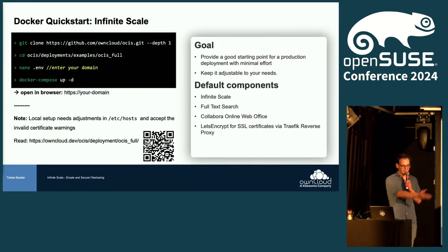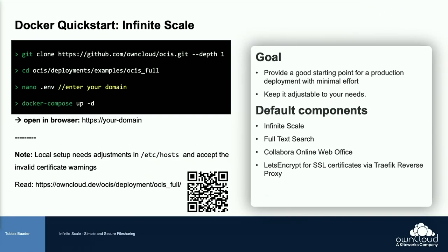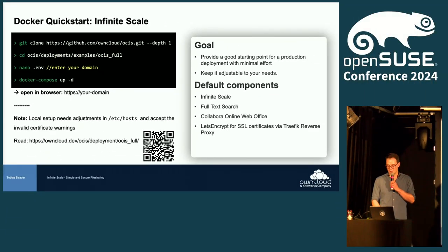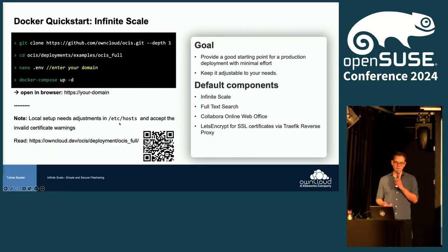How can you try it yourself? Very simple. The team prepared a Docker Compose setup. You just clone the repo, then edit the environment variable file — basically, if you're fine with the defaults, you just need to enter your domain. What you get is Infinite Scale core, full-text search, Collabora for full-fledged web office, and a Let's Encrypt SSL certificate. It takes maybe a few minutes to get up and running. One note: if you try this on your local machine, you need to edit your ETC hosts file and accept the invalid certificate warnings.